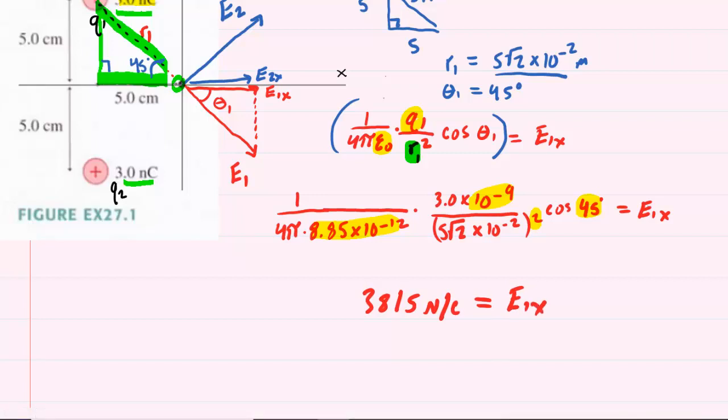By a similar chain of logic, we should notice that E2x is going to have the same magnitude as well as the same direction. We've drawn it already into our diagram. The charge Q2 is the same distance to this point. It also has the same magnitude of charge, positive 3 nanocoulombs. So, by the same line of reasoning, we would see that E2x is also 3,815 newtons per coulomb.